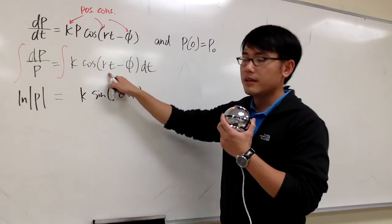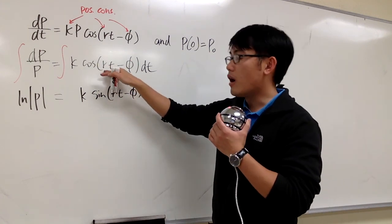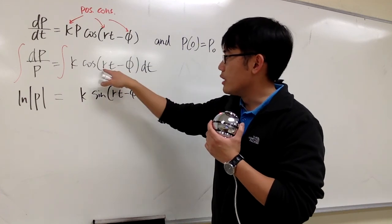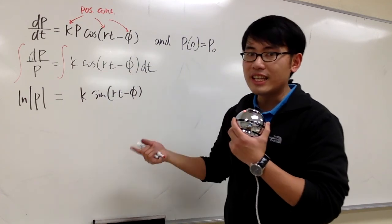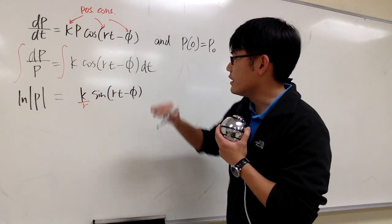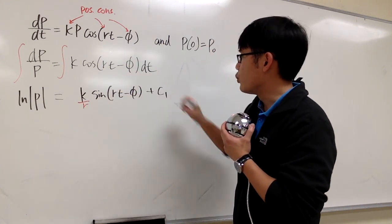And I can only do that because inside, the derivative is just r. And when you do backwards, the derivative inside is r, we have to divide it by r. So here we have k over r. So that's the antiderivative of this. And we put the plus c1.